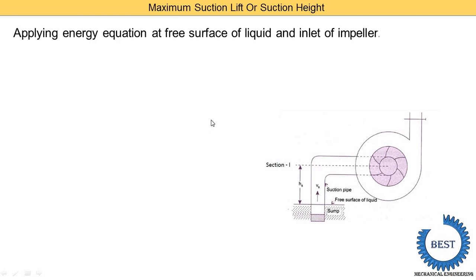Now we apply the energy equations at the free surface of the liquid and the inlet of the impeller. We apply Bernoulli's equation at two sections: this is section one, the atmospheric section at the sump level, and section two is at the center of the impeller.